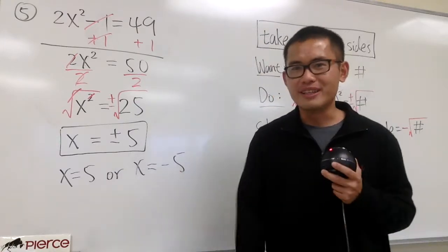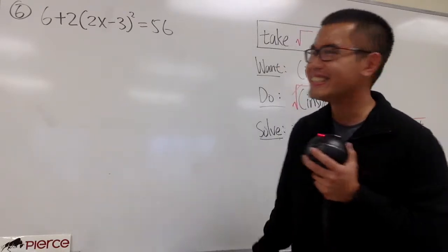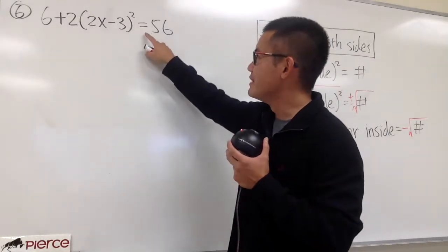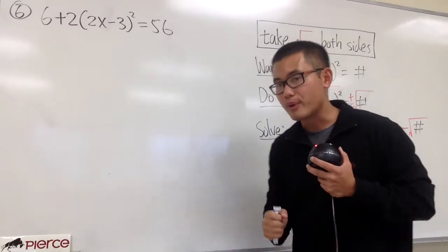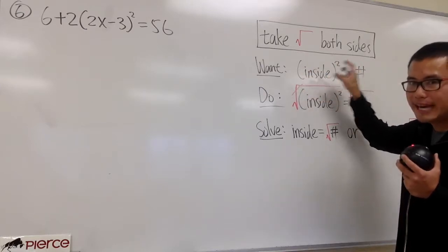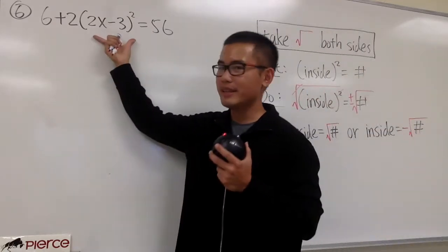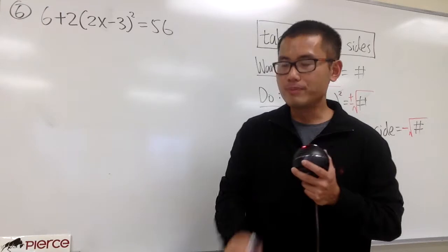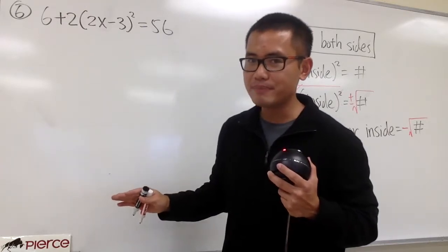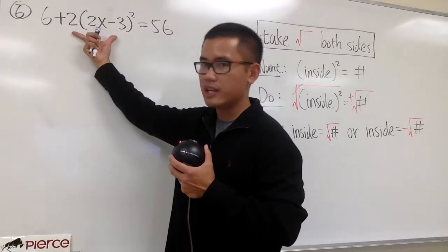You could have boxed the answer right there — it's totally okay to present the answer as x equals plus-minus 5, and you have to remember this means the same as the two separate equations. Now let's move on to the next example. This example is a little bigger, but we can handle it. We have 6 plus 2 times parentheses with 2x minus 3 inside, and then squared, and this is equal to 56. Remember, we want the parentheses with x inside and then squared to be isolated and equal to a number.